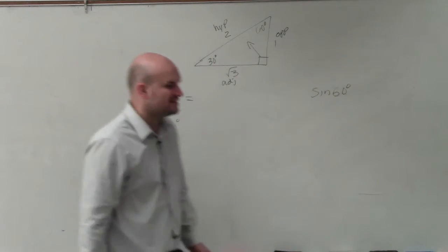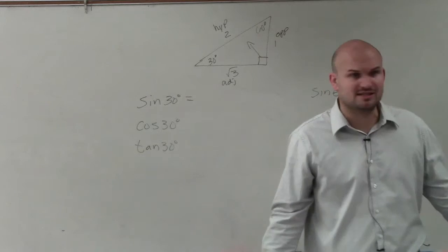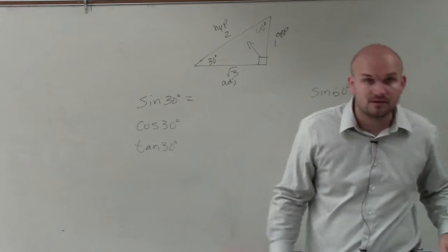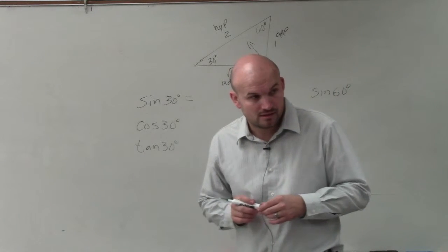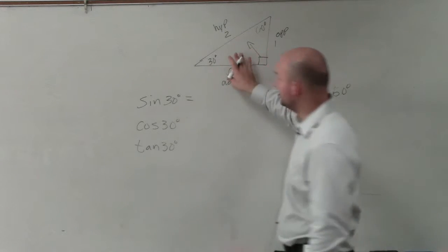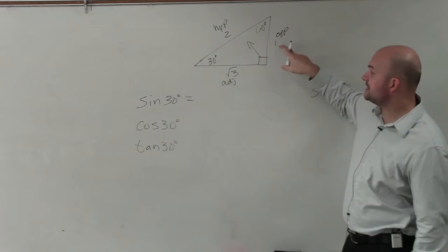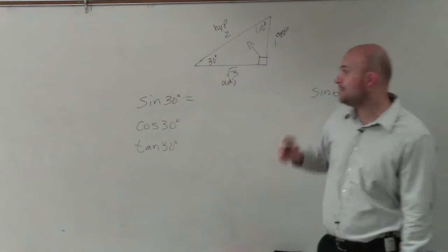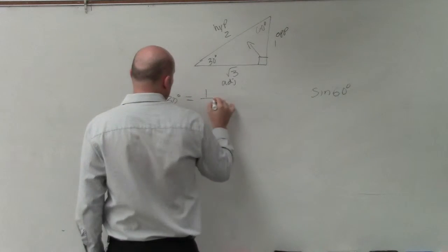So the sine of 30 degrees, does anybody remember on your focus lesson last class period what sine represented? It's opposite over hypotenuse. So if you look at this triangle, the opposite side is 1 over your hypotenuse, which is 1 over 2.